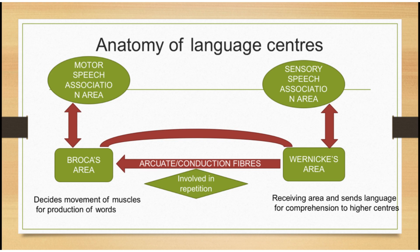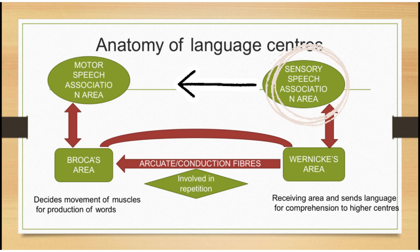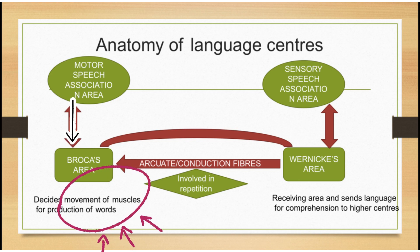Spoken words and language are received in Wernicke's area, which sends the language for comprehension to higher centers — that is, the sensory speech association area — and also sends the signal to Broca's area via arcuate fibers. After comprehension, the sensory speech association area sends the signal to the motor speech association area, and from here the signals are sent to Broca's area for movement of muscles that lead to production of words.